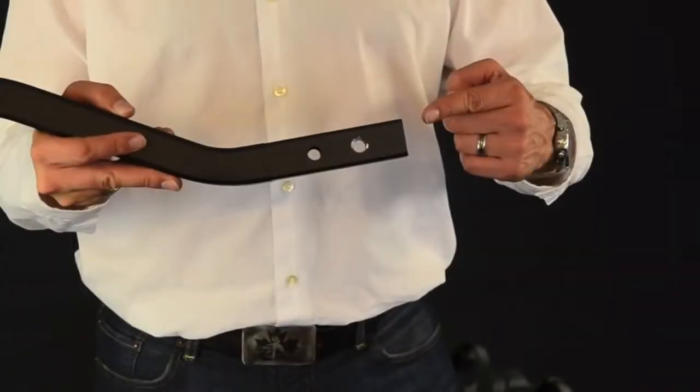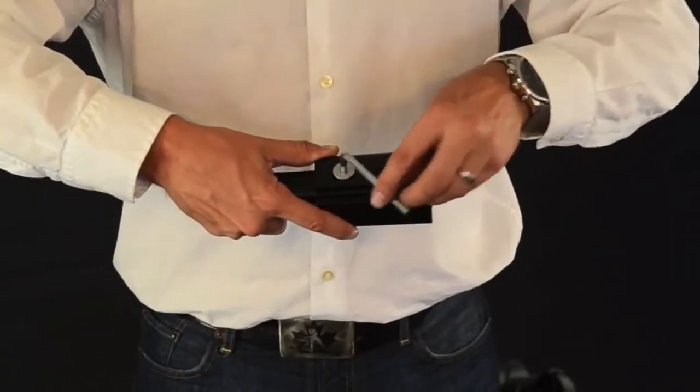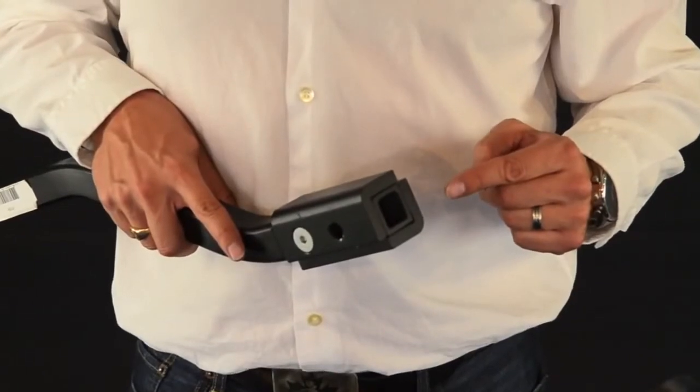The one and a quarter inch receiver bar has the ability to add the Swagman universal foot as pictured. That allows it to fit into two inch receivers as well.